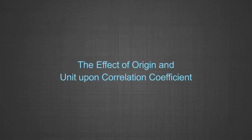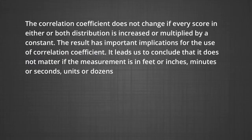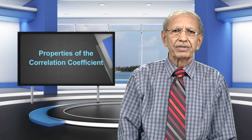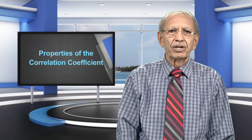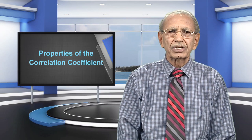We are going to discuss the effect of origin and unit upon the correlation coefficient. The value of R is invariant under transformations of unit and origin. The correlation coefficient does not change if both distributions are increased or multiplied by a constant. It does not matter if measurement is in feet or inches, minutes or seconds, or units or dozens — the correlation between variables will be the same. While working with large values in the raw score method, it is advisable to subtract a constant from all scores to avoid working with large numbers.